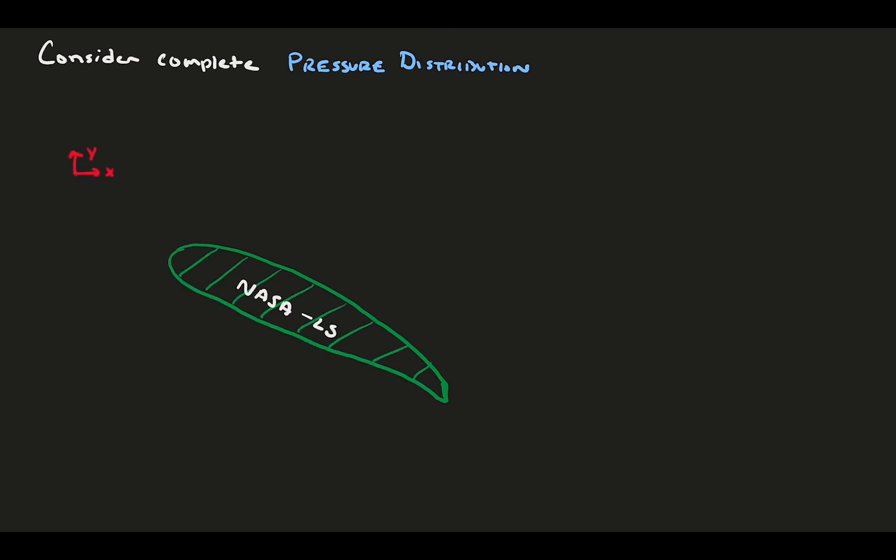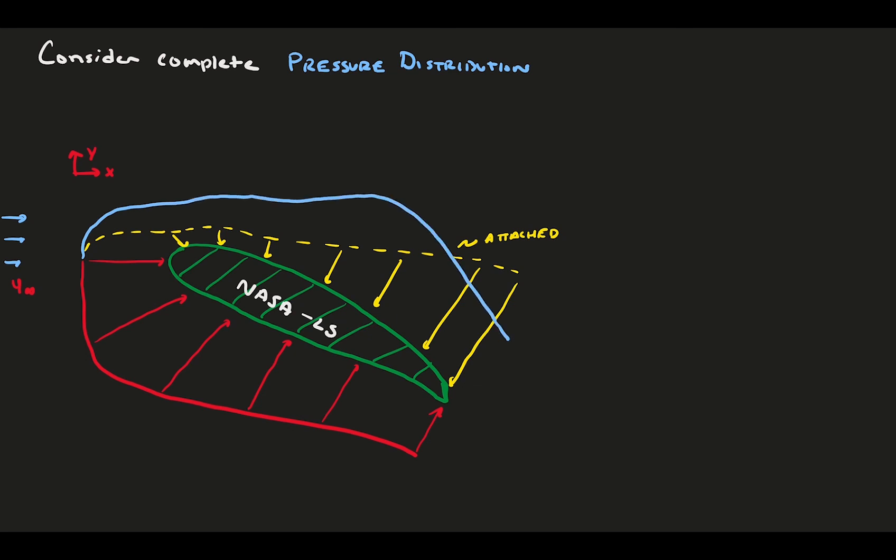First, we draw the bottom pressure distribution. It's high near the nose, but relatively consistent downstream. On the top, we will start by drawing what the ideal pressure distribution would be. The pressure is much lower near the nose, which is where the primary lift is produced, and then it has almost a perfectly constant pressure distribution downstream. Unfortunately, the real pressure distribution is due to separation. There's substantially higher pressure at the top, and then a drop in the pressure near the back.